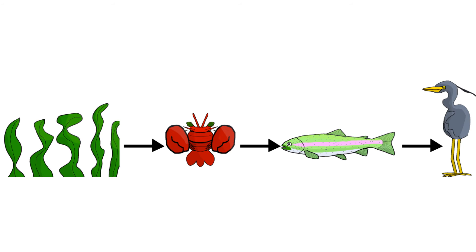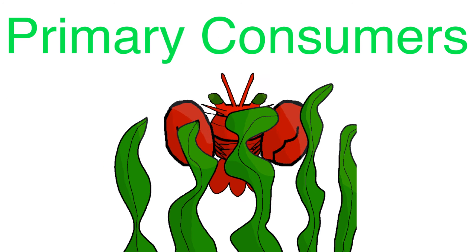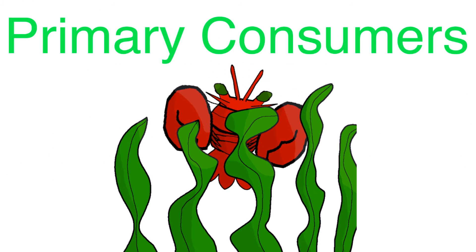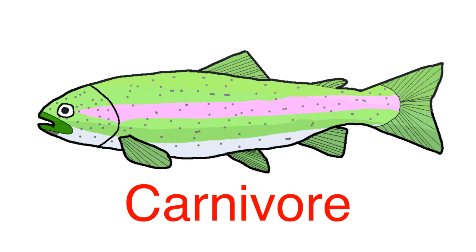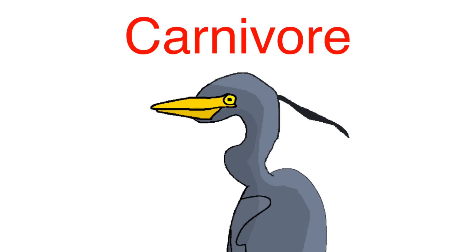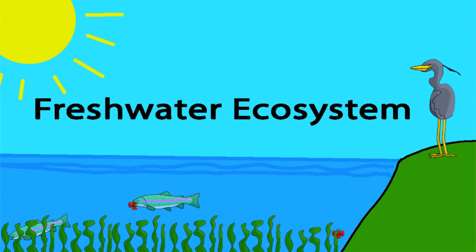Let's look at this example. To start off, the sun gives abiotic energy to the freshwater seaweed. Afterwards, the seaweed is eaten by crayfish, following which the crayfish gets eaten by a rainbow trout. Lastly, the rainbow trout is eaten by a great blue heron. This food chain and everything else found here is what makes the freshwater ecosystem unique.